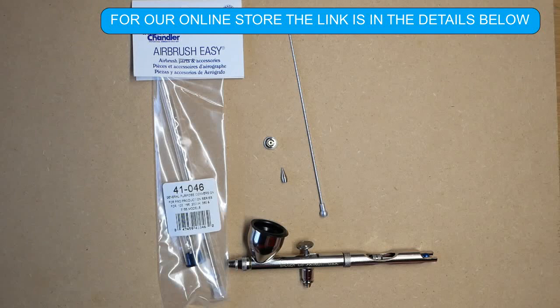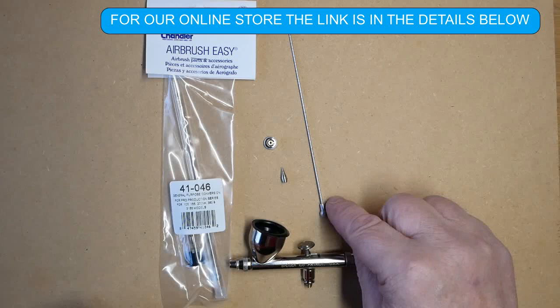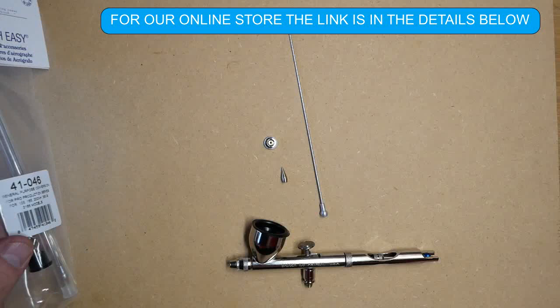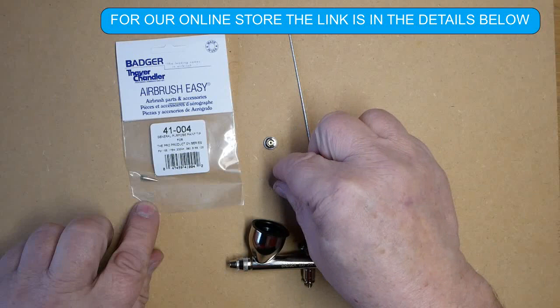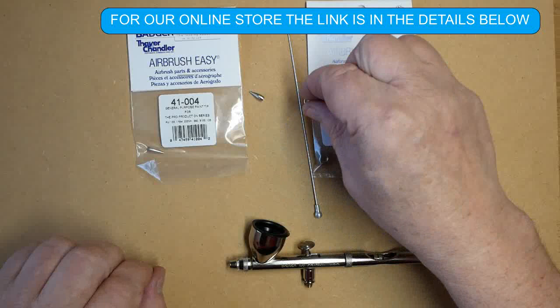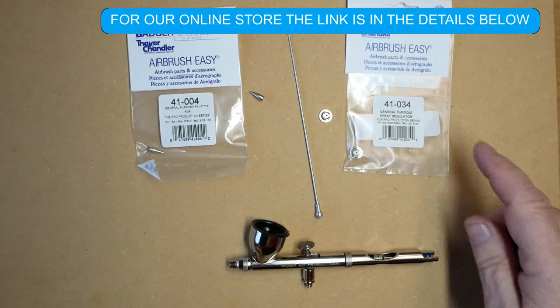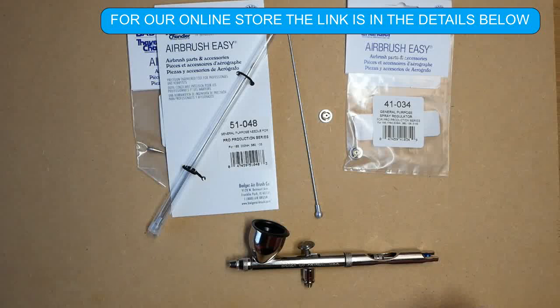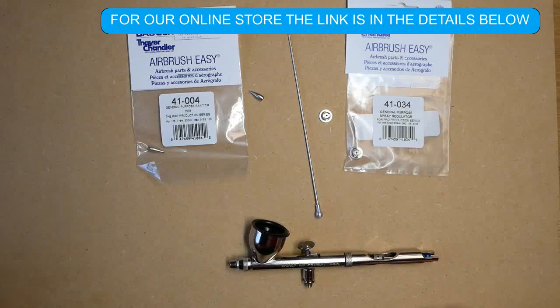The parts: there are three parts in this kit and they're all available separately. The tip is part 41004, the spray regulator is part 41034, and the needle is part 51048.